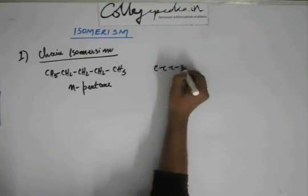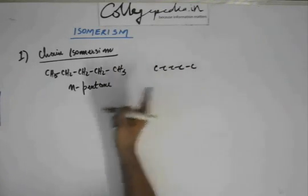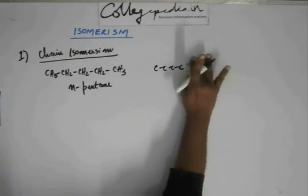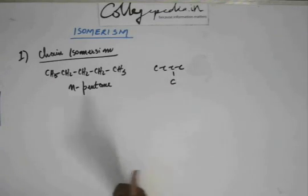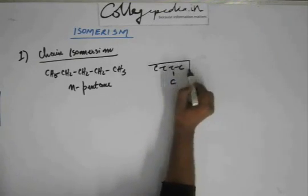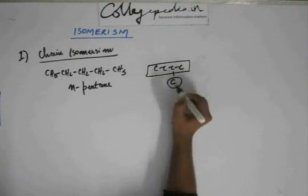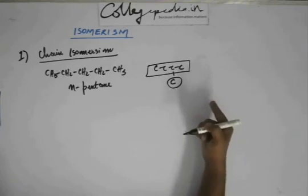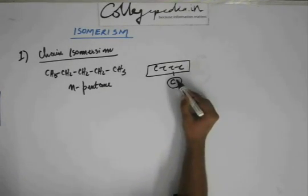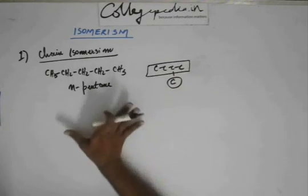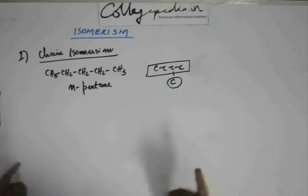If you put the methyl on the first carbon, you get the same structure back — not a new idea. So put the methyl on the second carbon and you get a different structure. The main chain will have three carbons, so the carbon skeleton has been changed. This becomes 2-methylbutane. Pentane and 2-methylbutane have the same molecular formula, so they are isomers.